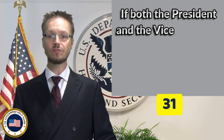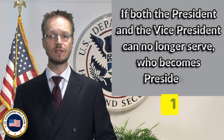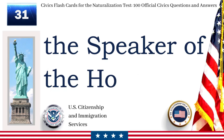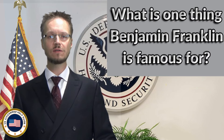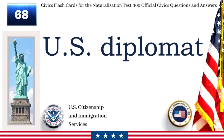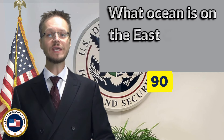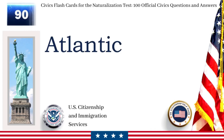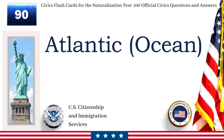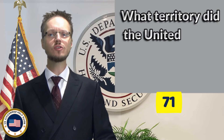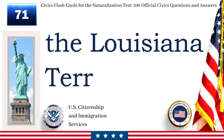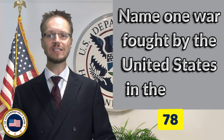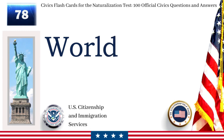If both the president and the vice president can no longer serve, who becomes president? The Speaker of the House. What is one thing Benjamin Franklin is famous for? U.S. diplomat. What ocean is on the east coast of the United States? Atlantic Ocean. What territory did the United States buy from France in 1803? The Louisiana Territory. Name one war fought by the United States in the 1900s. World War II.